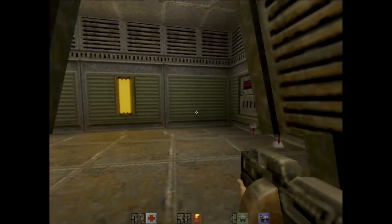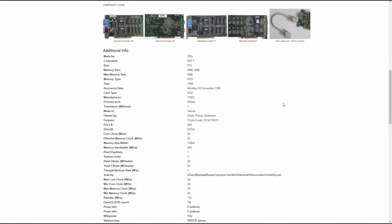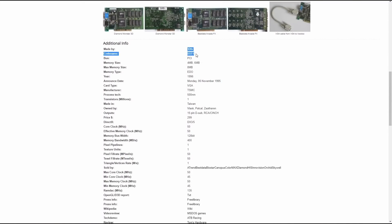I certainly envied my friend when he got his Voodoo graphics card from Orchid with 4 MB of memory. Hey, wait a minute. Memory size of 6 MB and the maximum memory size of 8 MB for the original Voodoo chipset. Did you know this?